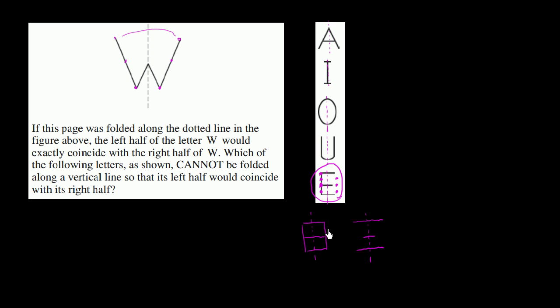So this is the one that cannot be folded along a vertical line so this left half would coincide with its right half.